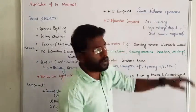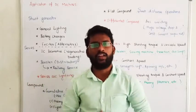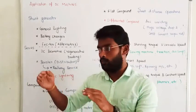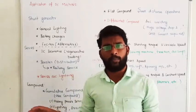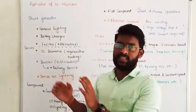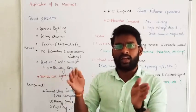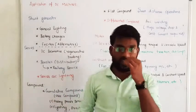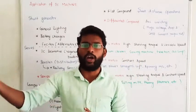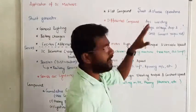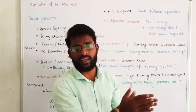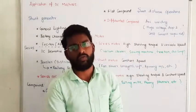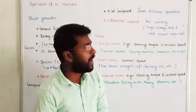Flat Compound is used for small distance operations. For example, if there is a hostel or residential area nearby and you need to provide power facilities over a small distance, in such a case we can design Flat Compounded DC Generators to provide the power supply. So for small hotels, residential areas, and small hostels, we give preference to Flat Compounded generators.